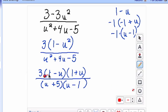I'm just going to cross this one out. I'm going to rewrite it as a negative 1 times the quantity of u minus 1.